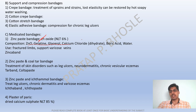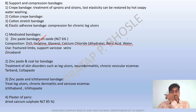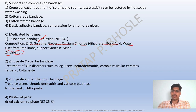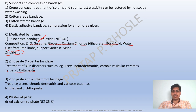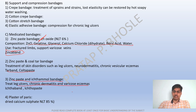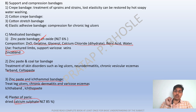Medicated bandages include zinc paste bandage and zinc oxide bandage. The composition of zinc paste bandage includes zinc oxide, gelatin, calcium chloride, boric acid, and water. Zinc bandage, zinc paste and coal tar bandage, and ictamol (ichthammol) bandage are used to treat leg ulcers, chronic dermatitis, and varicose eczema. Plaster of Paris contains calcium sulfate.